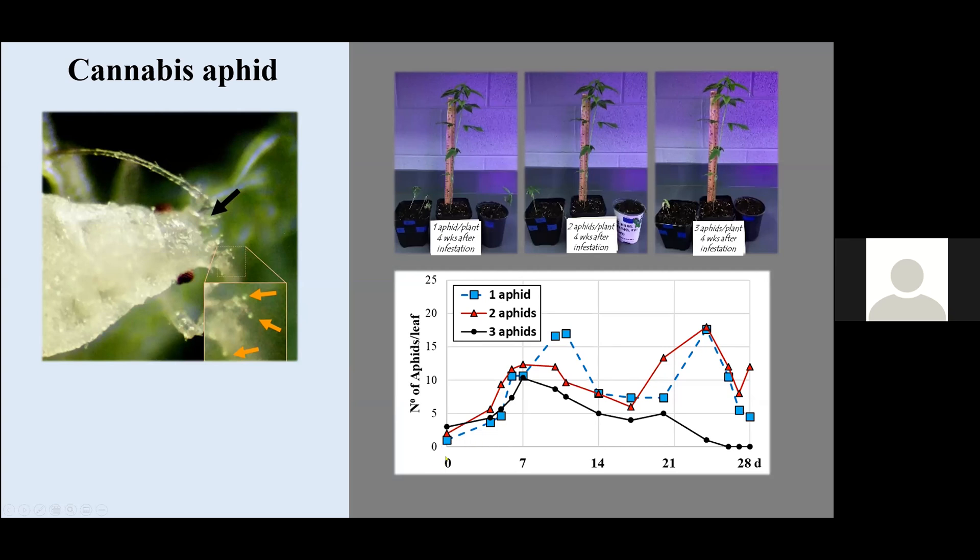This is the data where we collected them in 28 days. This is the number of aphids per the middle leaflet. On the three aphids per plant, all the populations almost reach similar levels at seven days. But then after that, on the ones that we released three aphids, the population decreased. This reduction of population is due to these plants almost dying.